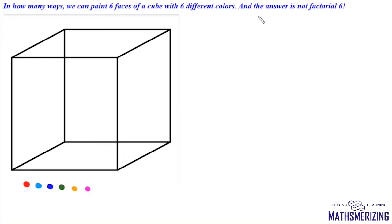Today we'll discuss a very interesting problem in permutations and combinations. The problem is: in how many ways can we paint the six faces of a cube with six different colors? We have six different colors and we need to use all six to paint all six faces of the cube. The first thing that generally comes to mind is that six colors on six faces can be arranged in factorial six ways, but clearly the answer is not factorial six.